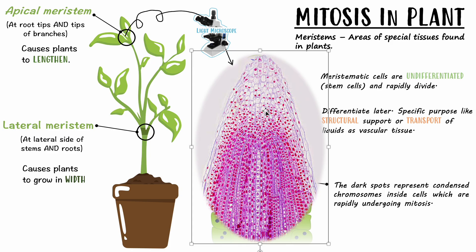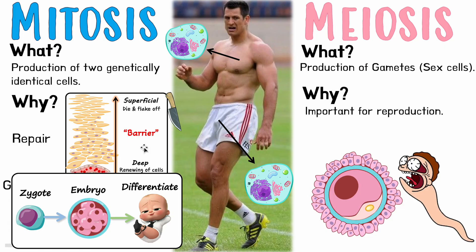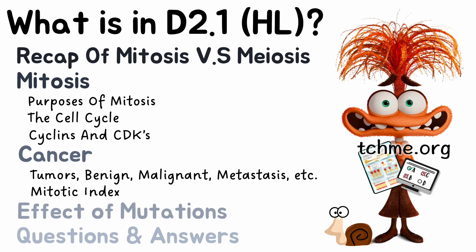Here's a realistic micrograph image — you can see all these condensed nuclei indicating mitosis is happening: prophase, metaphase, and so on. The cells below that area are starting to differentiate and become their true purpose, whether structural to keep the plant sturdy, or to become xylem or phloem to carry sugars and water around the plant. That's how mitosis is involved in plant growth thanks to these meristems.